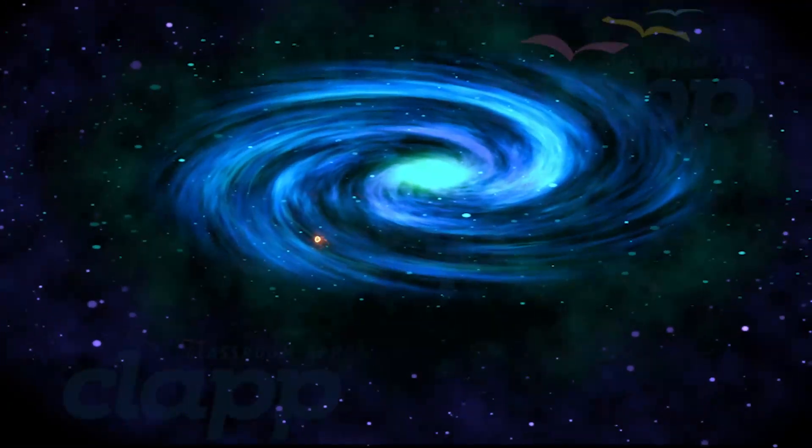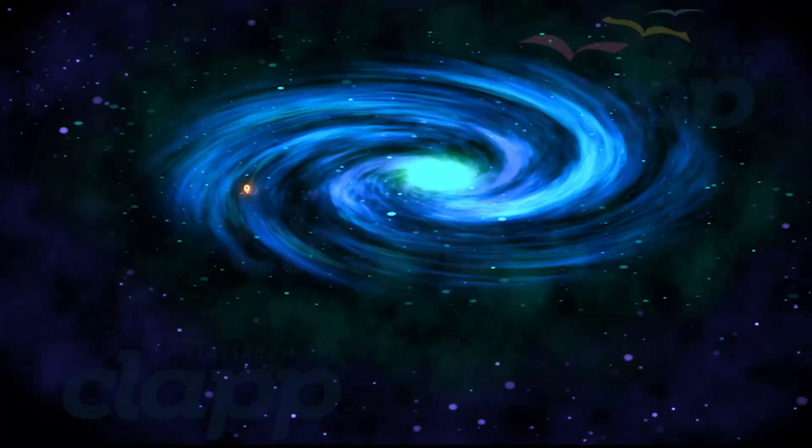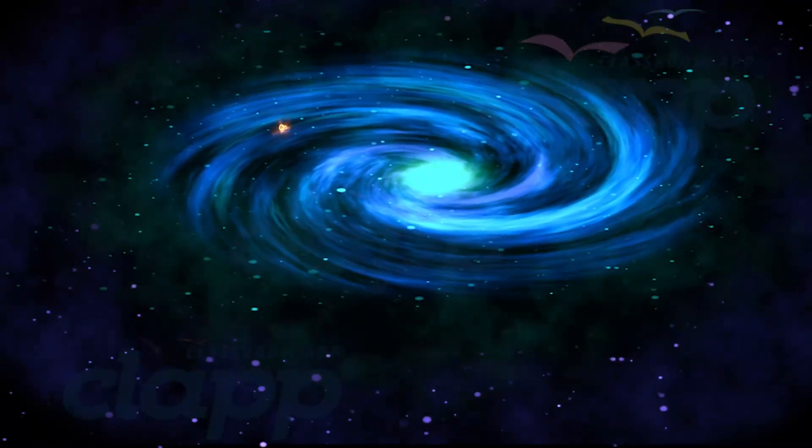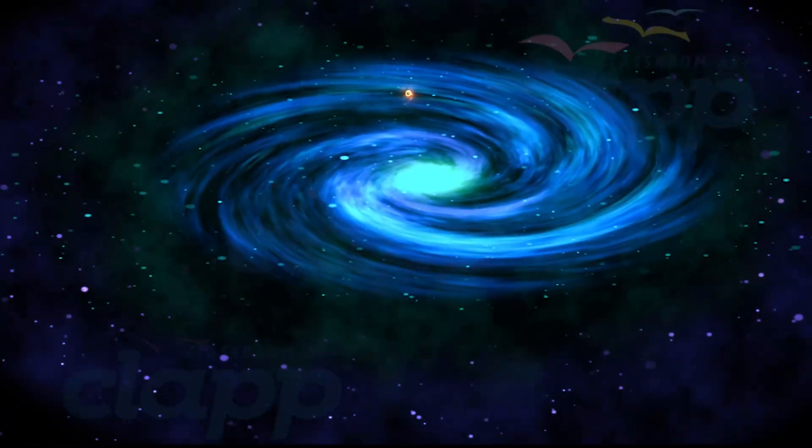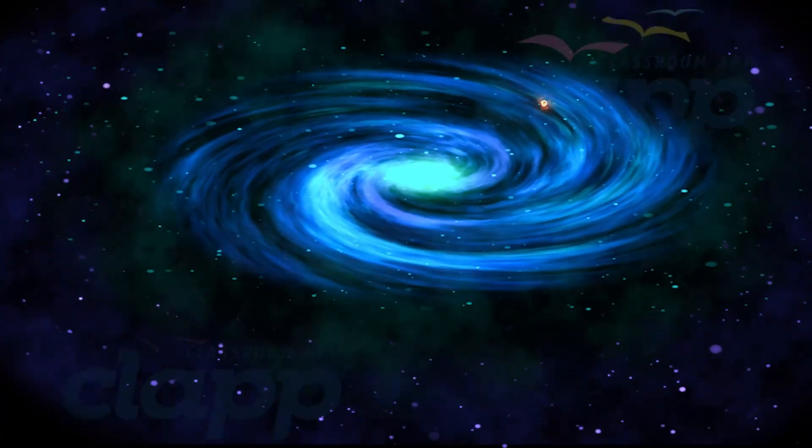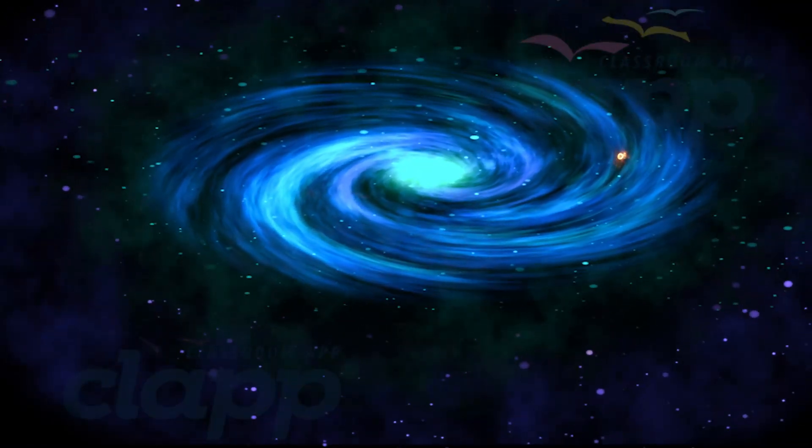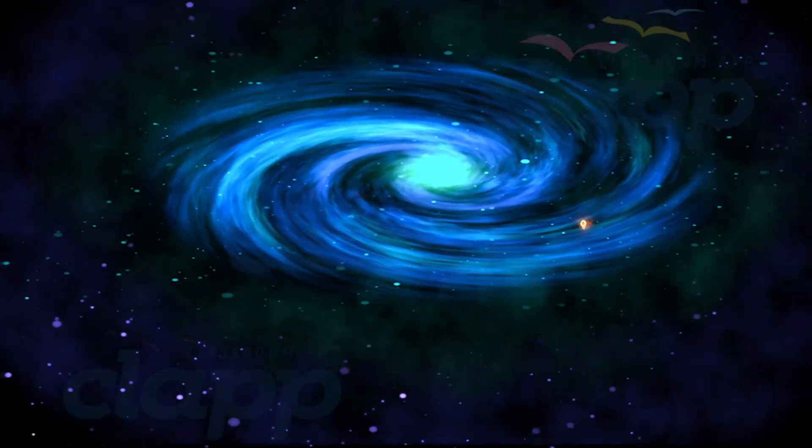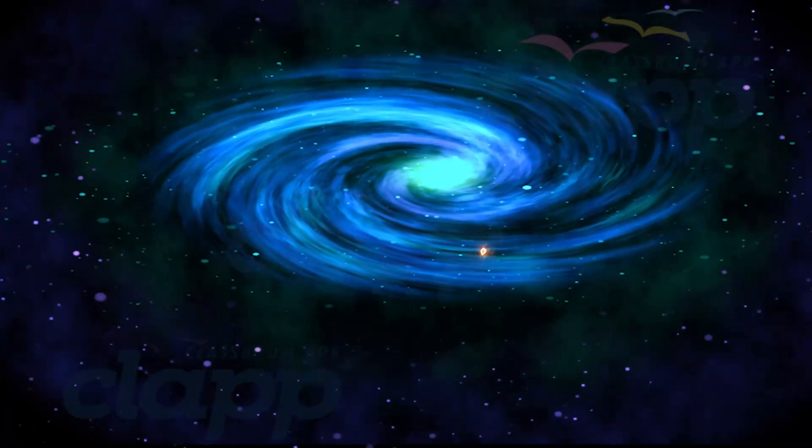Our solar system is part of the Milky Way galaxy, a spiral galaxy. Our solar system is located 27,000 light years away from the center of the galaxy. It has four arms. Our solar system is in the inner edge of the Orion arm of the galaxy. Our solar system is also rotating around the center of the galaxy at a speed of around 224 kilometers per second. It will take 250 million years to complete one rotation in the galaxy.